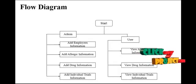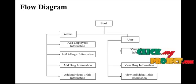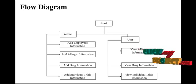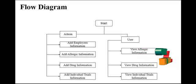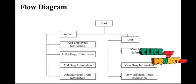This is the flow diagram. Two types of users are here: Admin and User module. On the admin side, all drug-related details and employee details will be added by the admin. In the admin's Add Employee Information module, all employee details will be added and maintained.